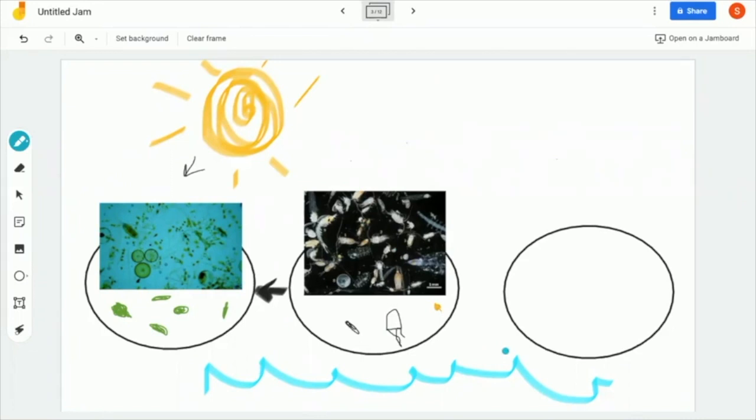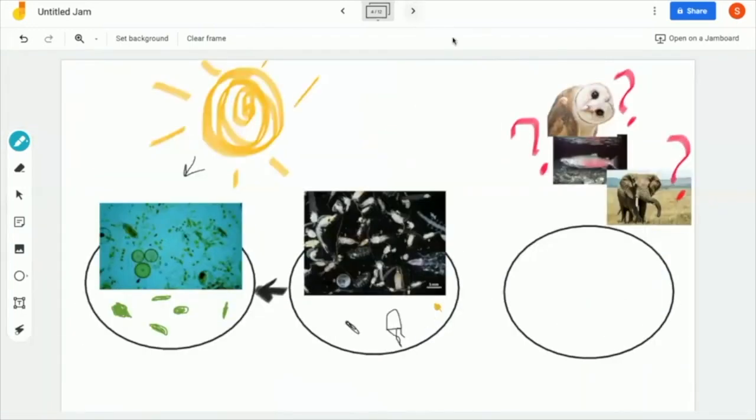Now referring back to the Klamath River which is what we were talking about this entire lesson. Which critter do you think eats the zooplankton? An owl? Salmon? An elephant? Any guesses?